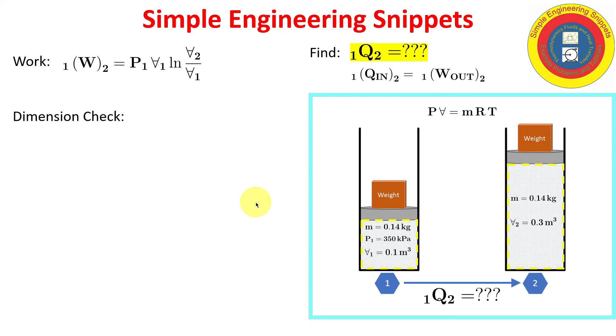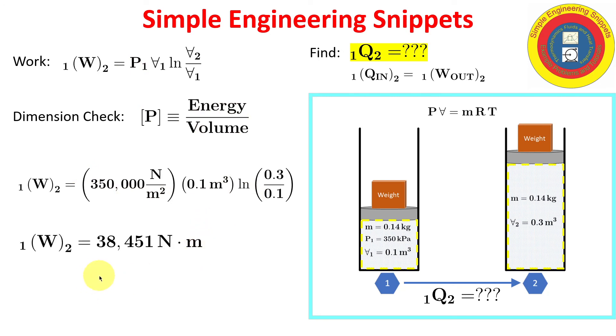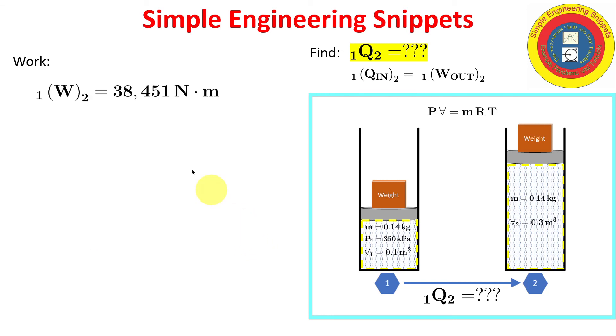Now, before we move on, let's do a dimension check because we're expecting something that calculates work, which has dimensions of energy. Again, pressure is energy per volume times volume, so I get energy, so that's good. So let's substitute in the values and the units, and we obtain that the work out is 38,451 newton meters. That's good, and we already knew that the work out is equal to the heat addition, which is what we're looking for, and so the heat addition is 38,451 joules.